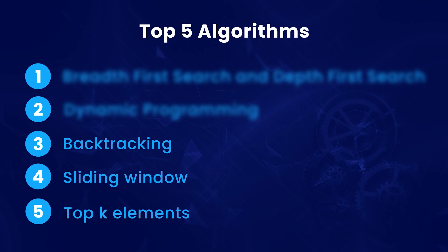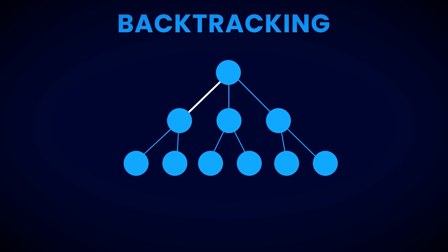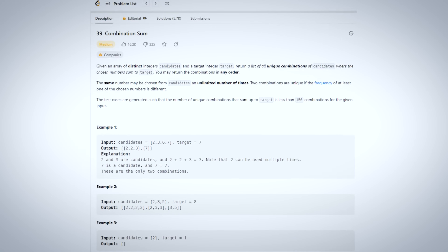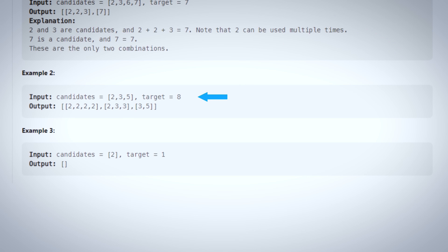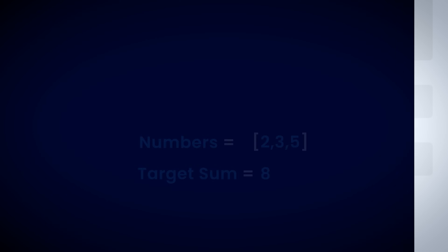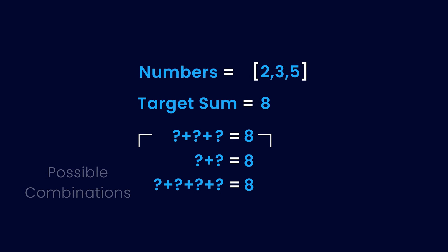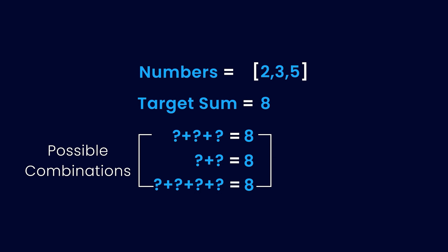At number 3, we have backtracking. In backtracking, we explore all possible solutions by building them step by step. When we reach an invalid state, we backtrack and start exploring other possible solutions. Backtracking is usually implemented using recursion. Let's understand backtracking with a famous problem called combination sum. In this problem, we are given a list of positive numbers and a target sum. You need to pick some numbers from the list so that they add up to the target sum, and return all the unique combinations that do so. You are allowed to pick a number more than once. For example, 2, 3, and 3 add up to the target sum of 8, so it's one of the combinations in the answer.